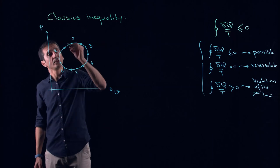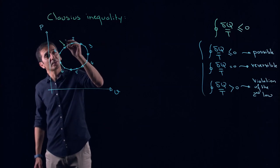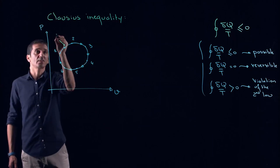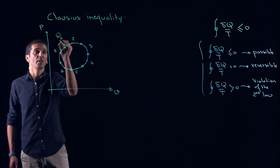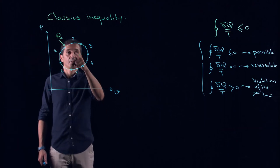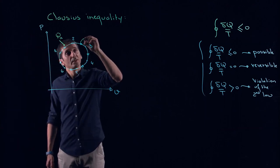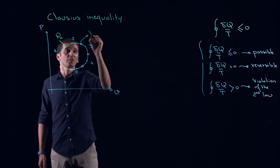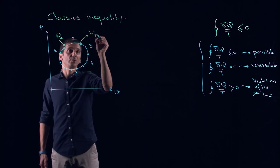For example, here from 1 to 2, a heat is provided, and this heat is, let's say, call it Q1,2. From 2 to 3, we have work out, which is work 2,3.